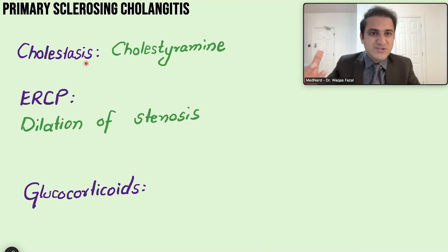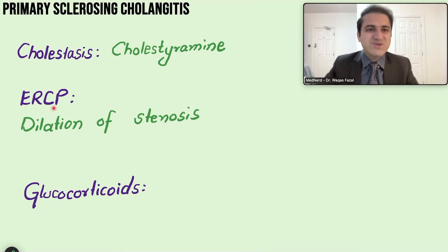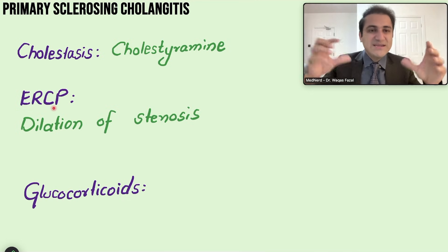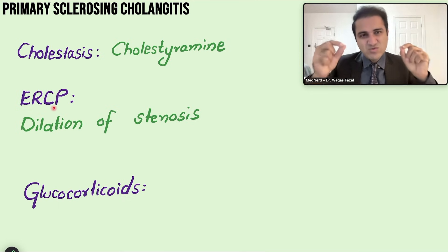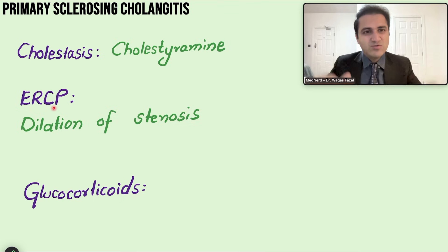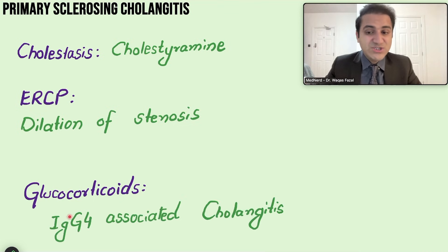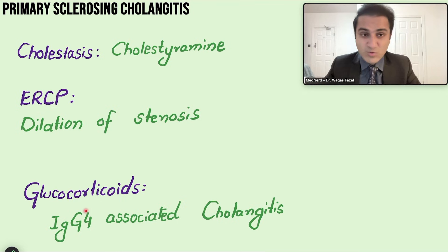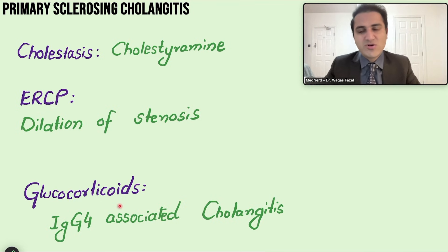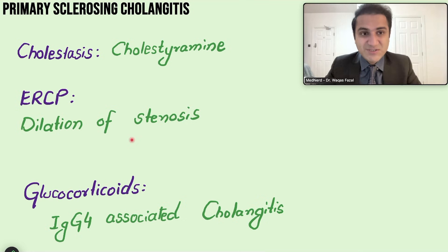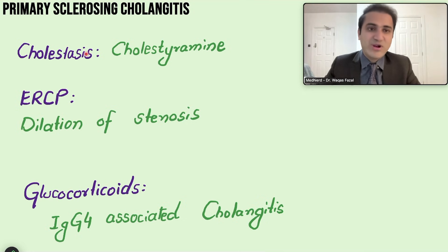Symptomatic treatment includes cholestyramine to reduce itching from cholestasis, ERCP to dilate and open strictures causing obstruction, and glucocorticoids if it is IgG4-associated cholangitis, which responds well to steroids. Liver transplant remains the definitive treatment.